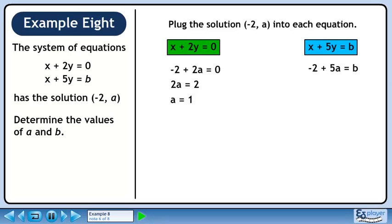Now we'll plug the point minus 2a into the second equation. This gives minus 2 plus 5a equals b. We already know what a is. It's 1.